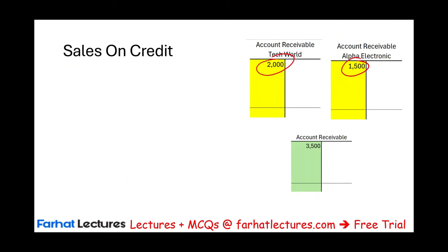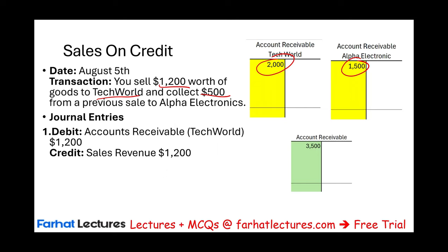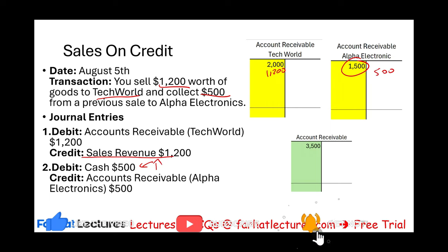Using those balances, let's assume on August 5th you sell $1,200 worth of goods to Tech World and collect $500 from Alpha. For the Tech World sale, you debit accounts receivable — Tech World — $1,200 and credit revenue. For the collection from Alpha, you debit cash and credit accounts receivable — Alpha — $500.